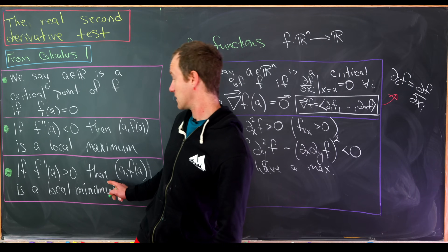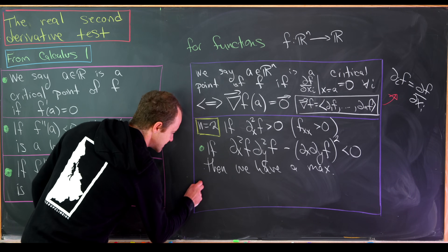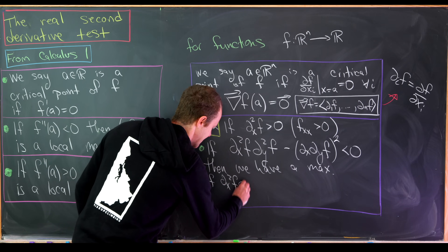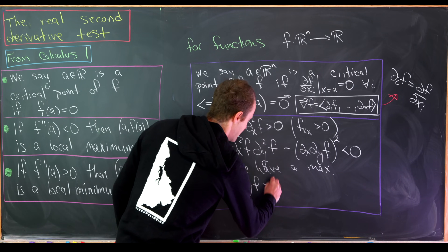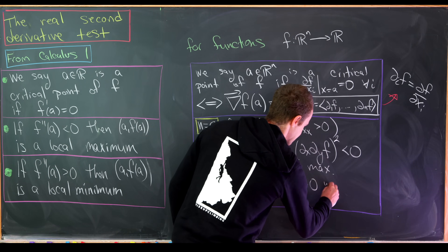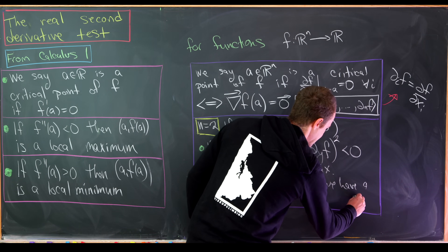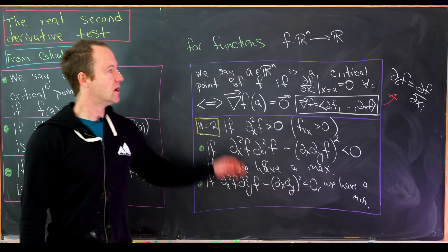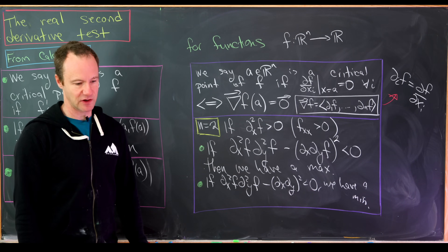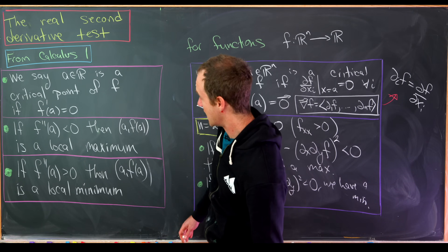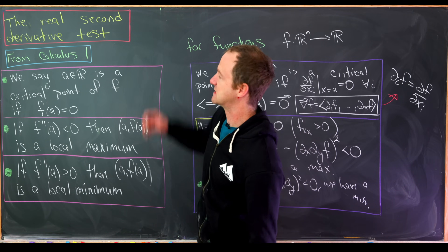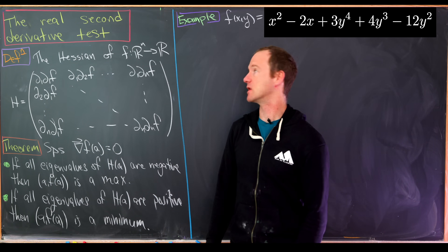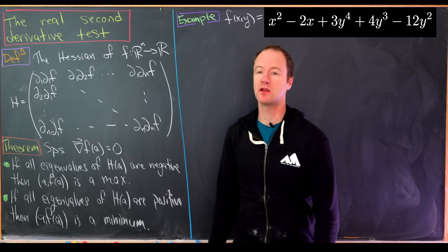Now that we've recalled this material from single-variable and standard multivariable calculus, I'd like to define the object that makes this generalization of the second derivative test possible. The object that will play the role of the second derivative for our multivariable second derivative test will be something called the Hessian matrix.